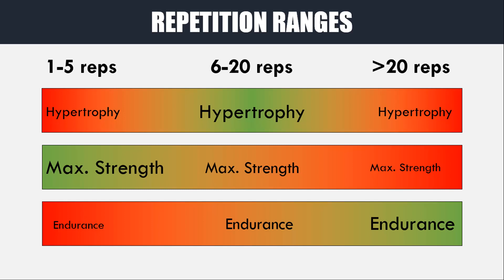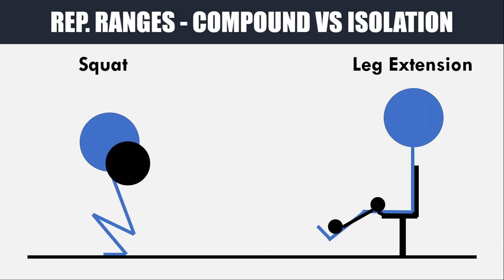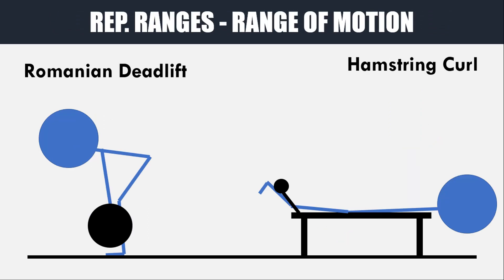So where on the 6 to 20 repetition range spectrum we choose will be based on the following factors. First, we need to consider if the exercise is more compound or more isolated. Compound lifts are generally better suited to lower rep ranges, while isolation exercises will generally be better suited to higher rep ranges. For example, a deep back squat may be better suited to the 6 to 10 rep range, while leg extensions may be better suited to the 10 to 15 rep range. We also need to consider how much range of motion the exercise involves and whether it puts the muscle in a highly stretched position. Generally, the larger the range of motion and more stretch it is placed under, the more quickly it will fatigue. So lower repetitions generally suit larger ranges of motion, and higher repetitions generally suit shorter ranges of motion.